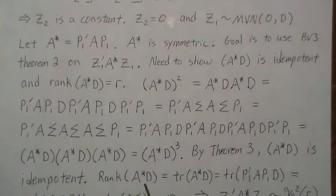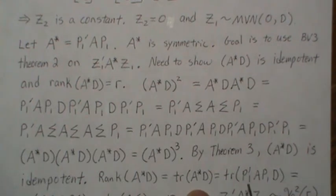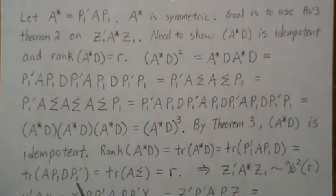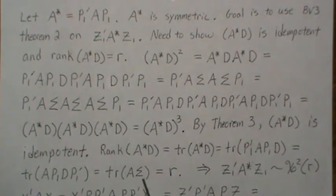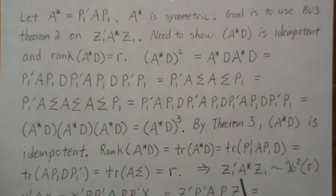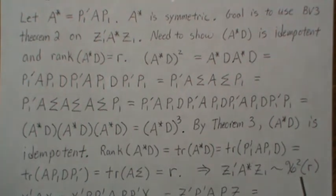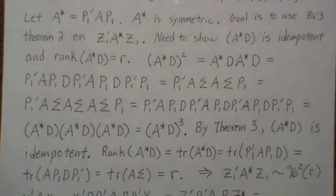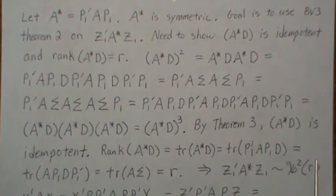For the rank: since A*D is idempotent, its rank equals its trace. The trace of A*D equals trace(P1'*A*P1*D) = trace(A*P1*D*P1') = trace(A*sigma), by the cyclic property of trace. One of the assumptions was that trace(A*sigma) = r. So by Theorem 2, z1'*A**z1 is chi-squared with r degrees of freedom.